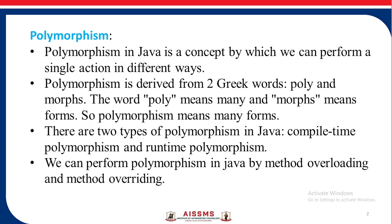There are two types of polymorphism in Java: compile-time polymorphism and run-time polymorphism. We can perform polymorphism in Java by method overloading and method overriding.